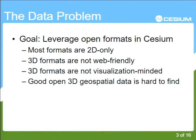We quickly ran into problems: most data and a lot of formats are 2D only or have very limited support for 3D. GeoJSON, for example, you can have a height property that says this polygon is in the air, but you can't actually make 3D shapes with it. 3D formats are not always web-friendly, or they're not really visualization-minded. Even something like GML or CityGML is a good geospatial format for data interoperability, but it's not laid out in a way that can be efficiently visualized, especially in a browser where your CPU usage is fairly limited.